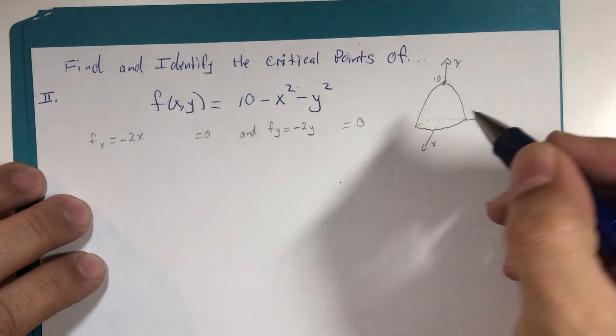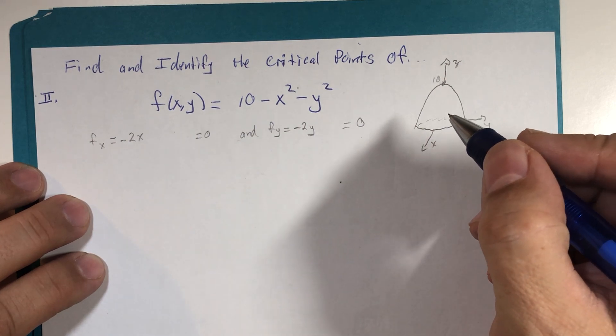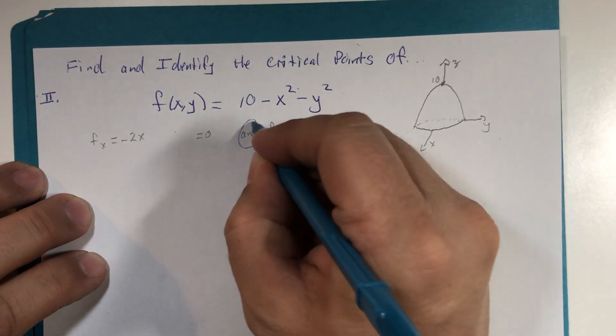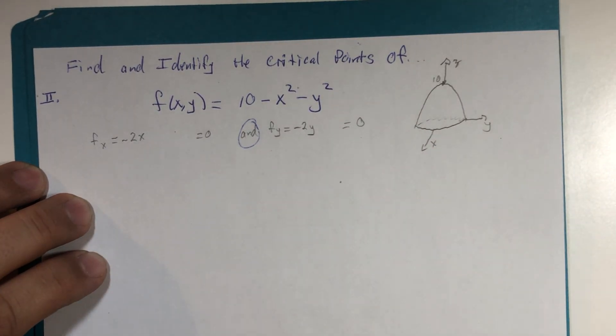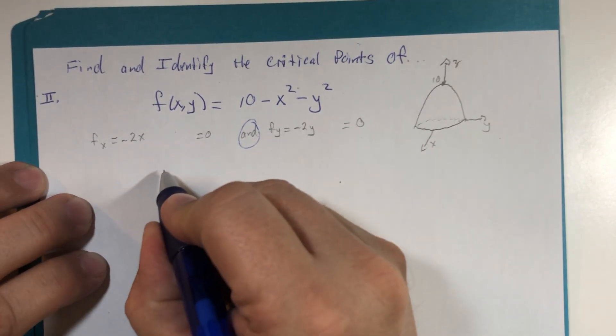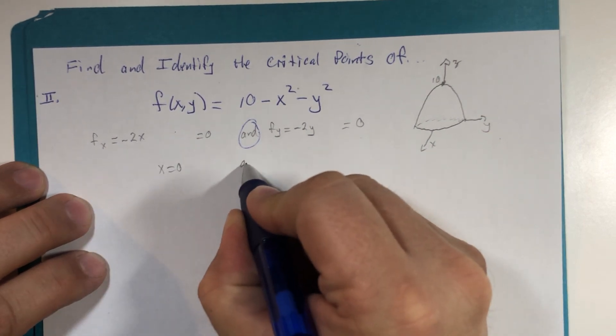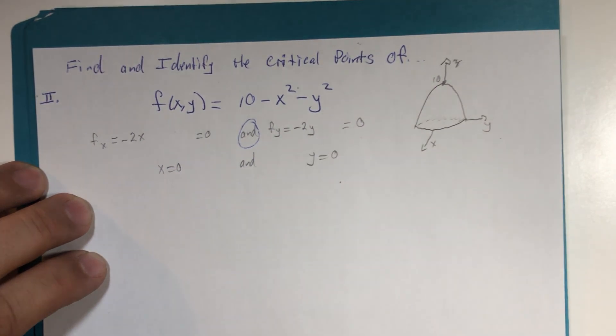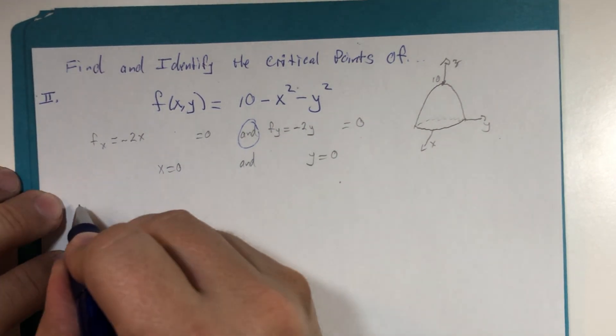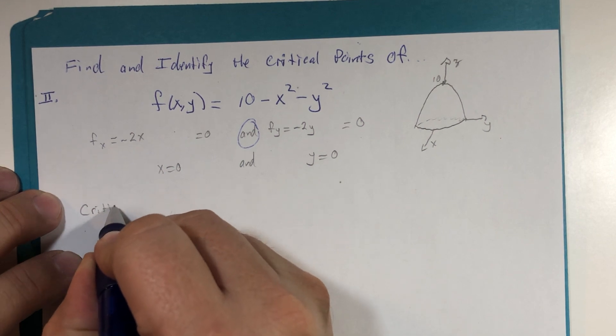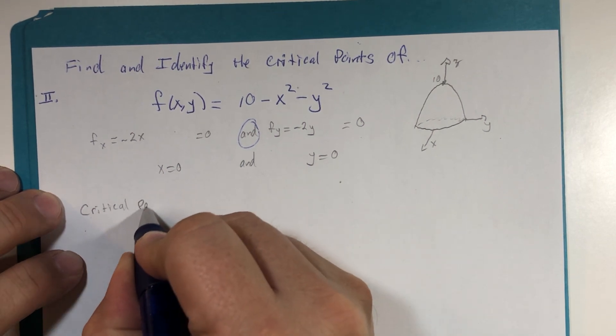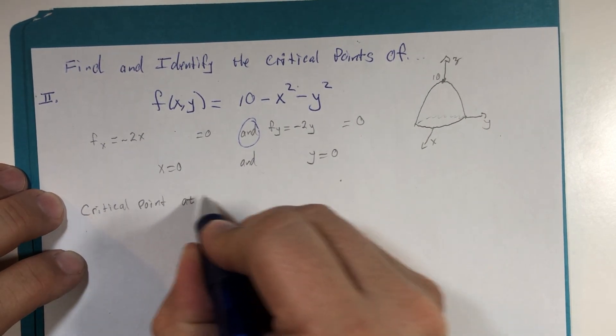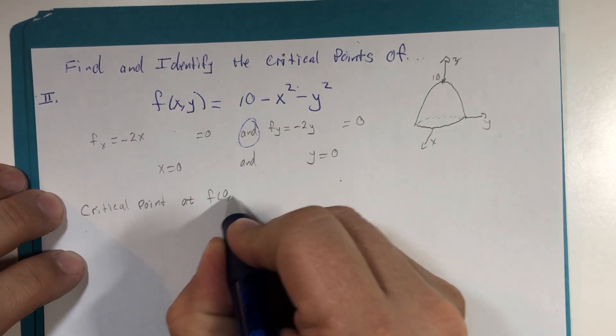And this algebraically isn't super difficult. The key word here is that they both must be equal to zero at the same time. So from here we would find out that x is zero and y is zero, and there really is no other combination to make this so. So this would be then called the critical point at f of zero zero.